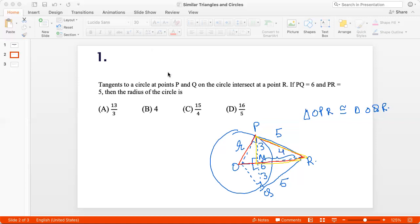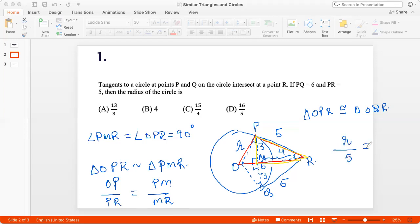Why? Because you can see that this angle PMR is equal to angle OPR which is 90 degrees and angle R is the common angle to both triangles. So triangle OPR is similar to triangle PMR. And so OP divided by PR will be PM divided by MR. So OP is the radius divided by PR is 5, which is 15 by 4, option C.